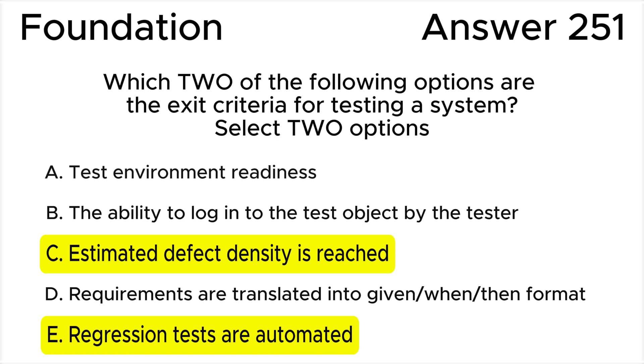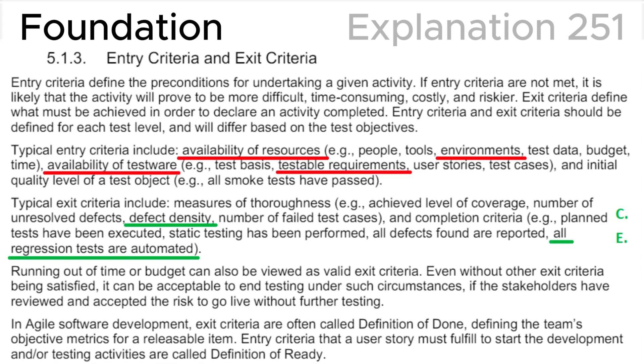My recommendation: please figure out all entry criteria and exit criteria. Explanation: Finally, let's look at section 5.1.3, Entry Criteria and Exit Criteria, in the ISTQB syllabus where we can see that typical entry criteria include availability of resources.